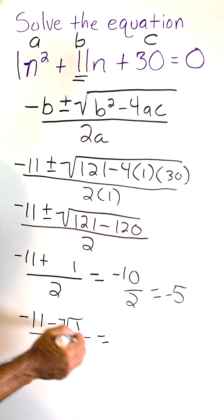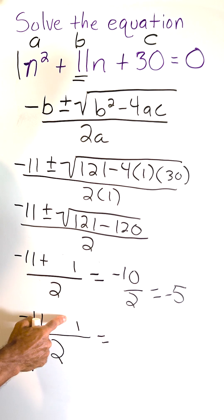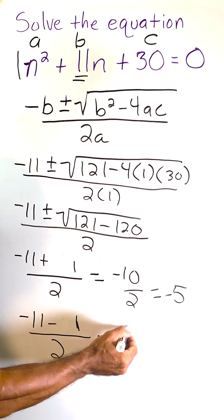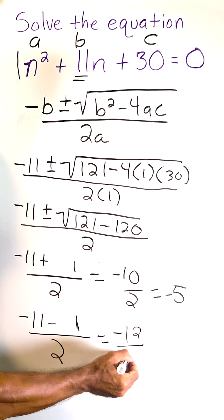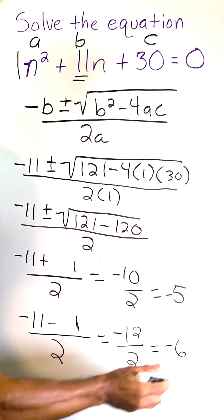And over here, we can also erase this radical because the square root of 1 is 1 and negative 11 and negative 1 is negative 12. And after dividing that by 2, we end up getting negative 6, which is our second solution.